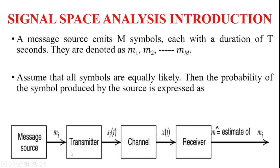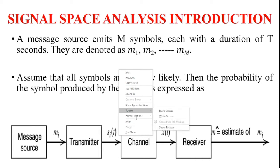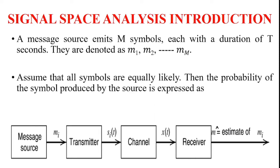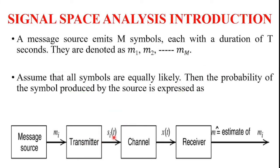This basic form of digital communication system consists of message source, transmitter, channel, and receiver. Mi is the output of the message source, and that output is applied to the transmitter. Si is the output of the transmitter, x is the output of the channel, and m-cap is the estimation of the message signal.